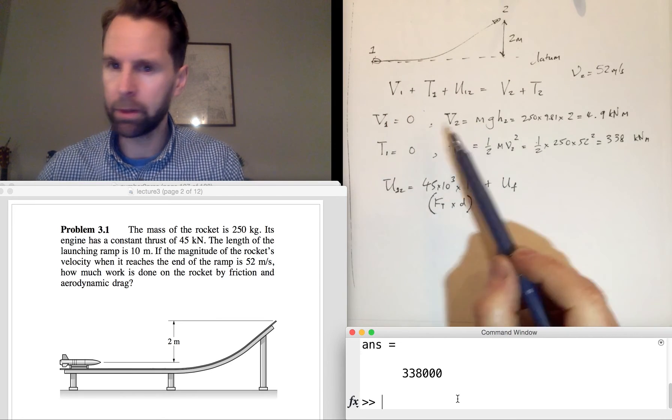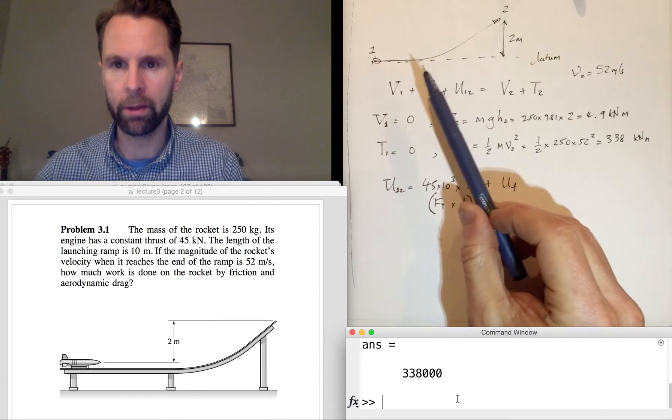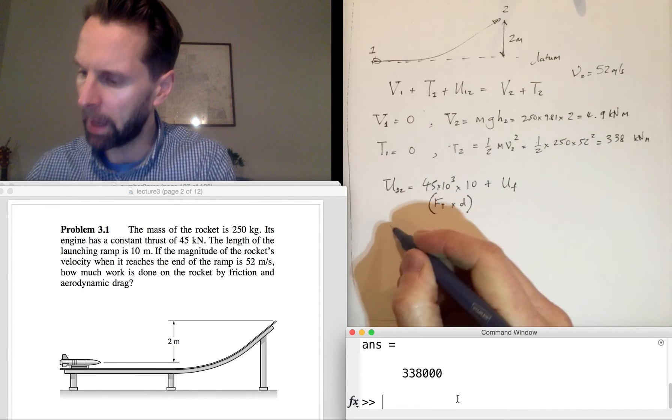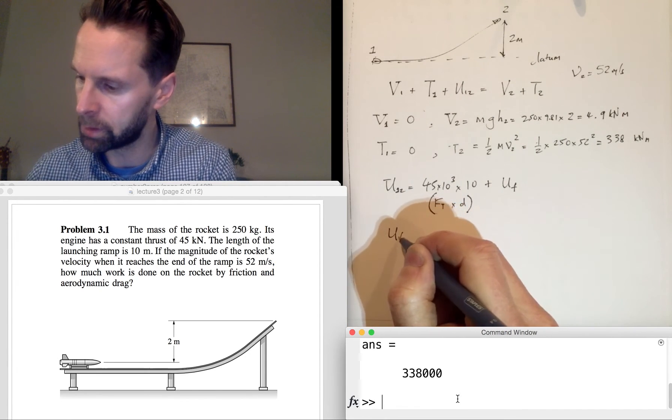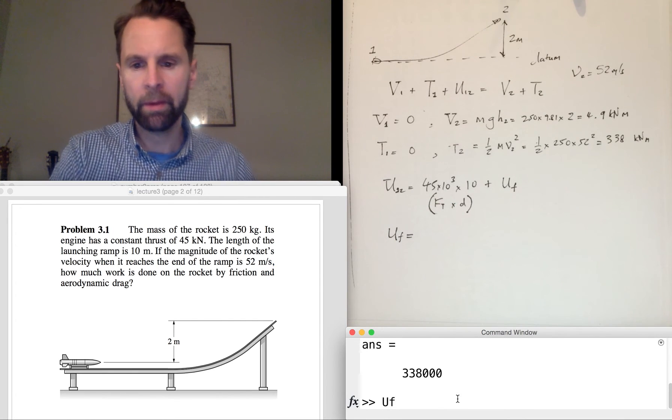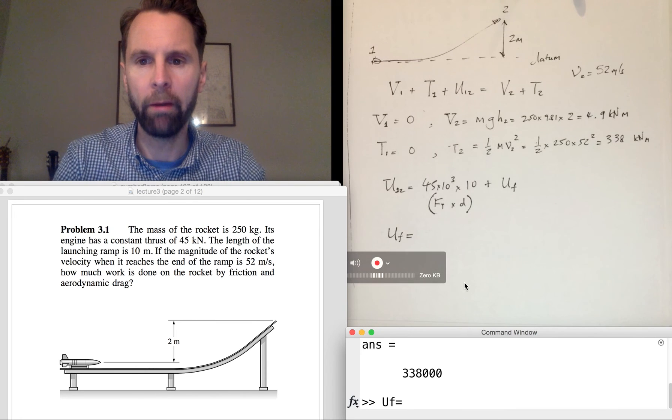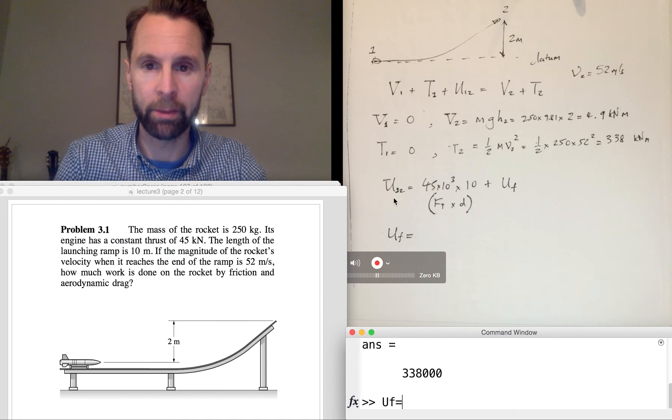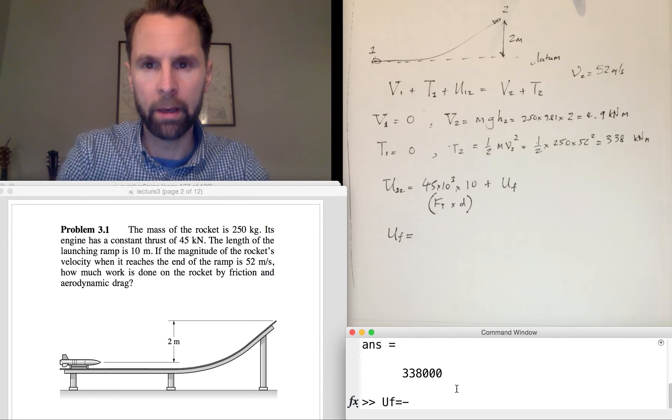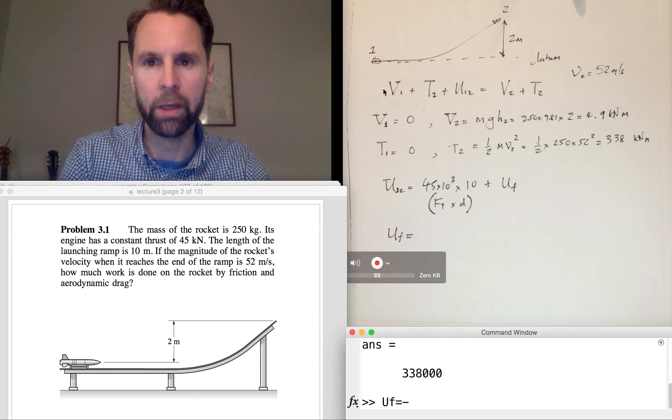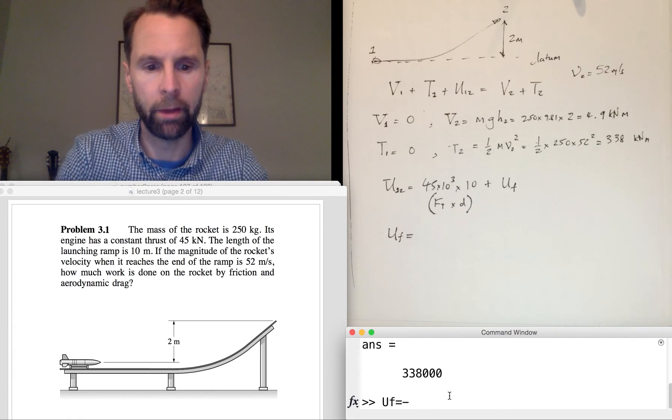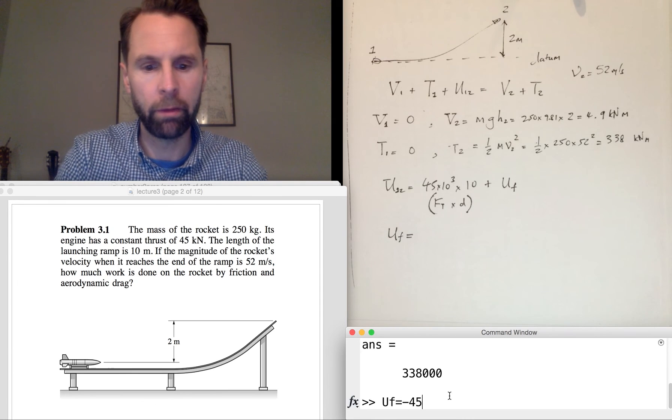So we've got each of these terms now which go into this equation here, and I can make that substitution. And I'm going to risk doing this—not in my head, but doing the rearrangement here. So Uf, once I've substituted this into there, it's going to give me—well, V1 and T1 are both zero, so I'll take the 45 times 10 to the 3 times 10 to the other side.